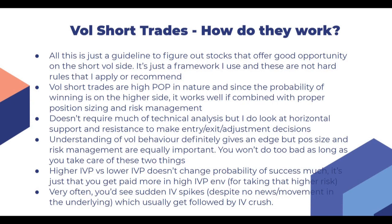For example, let's take Nifty. Nifty had been consolidating in the 15,500 to 15,900 range for the last two months. If we are in a vol short trade and that 15,900 to 15,950 zone is taken on the upside, it's best to get out of the vol short trade at that point in time and look for other underlyings where we can identify vol short trades. So I look at horizontal support and resistance to make entry, exit, and adjustment decisions.